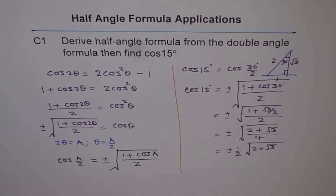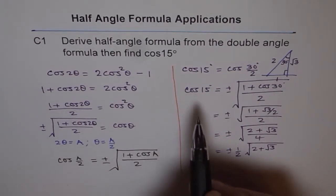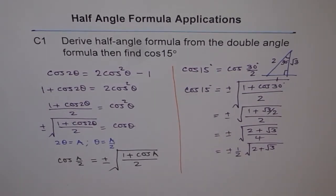Now, plus and minus gives us two values, but cos 15° is in quadrant 1, and in quadrant 1 it is always positive, and therefore we will take the positive value and not the negative value. So we get our answer as cos 15° = (1/2)√(2 + √3). So this is the exact answer.